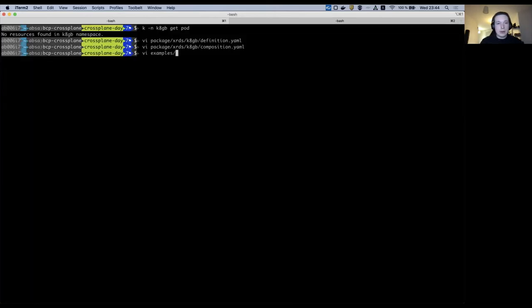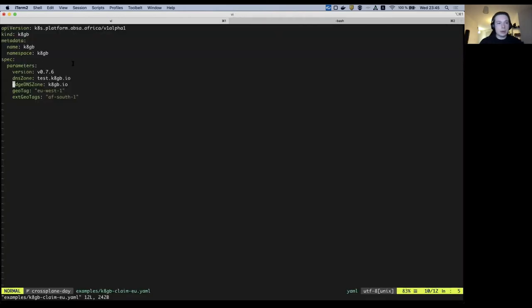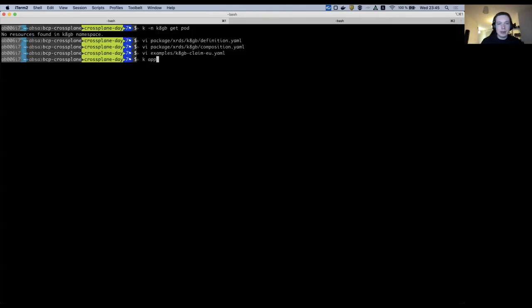We have examples of resource claims. So let's use the European one. So that's exactly this minimalistic abstraction that was demonstrated in the slides. So let's create a K8GB installation where it's tagged with EU-West-1 and it's going to talk by configuration with Africa. So it is as easy as apply with kubectl commands.